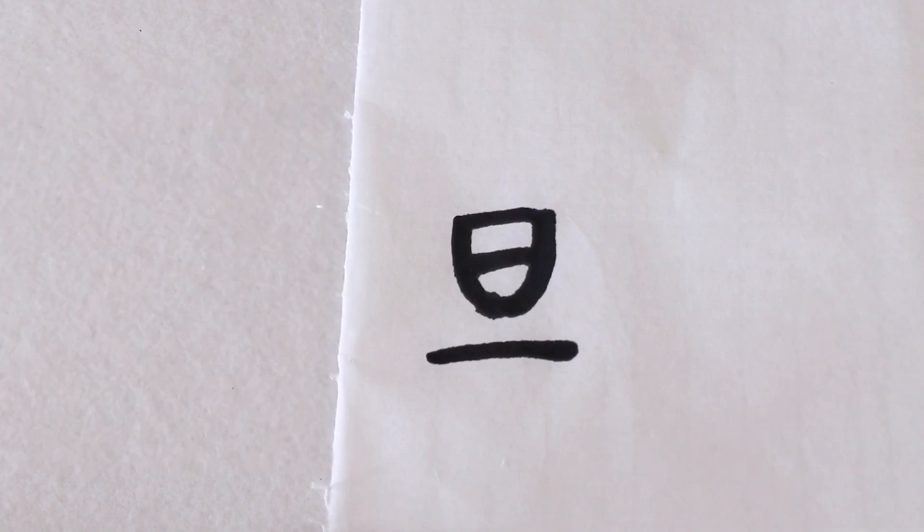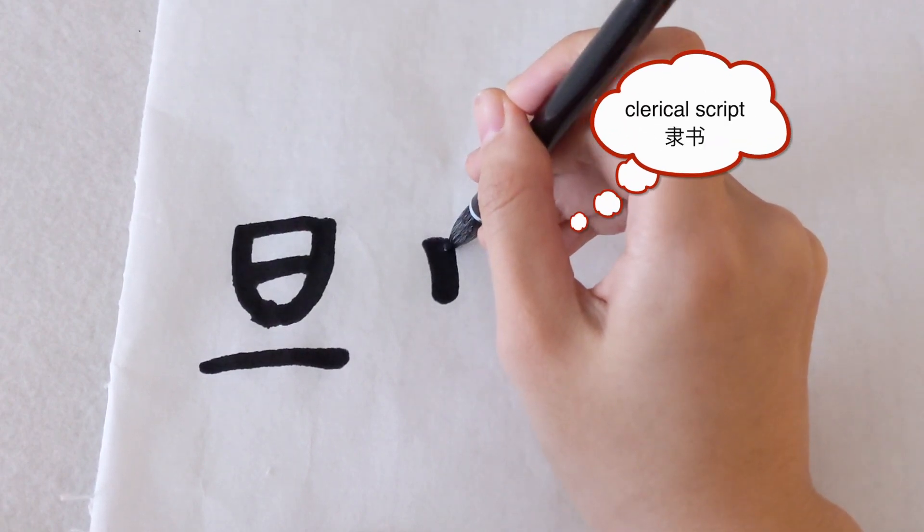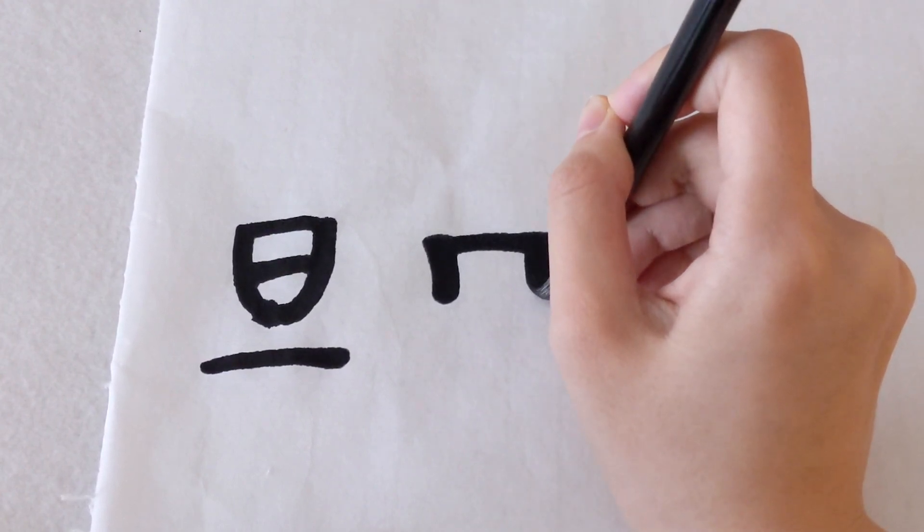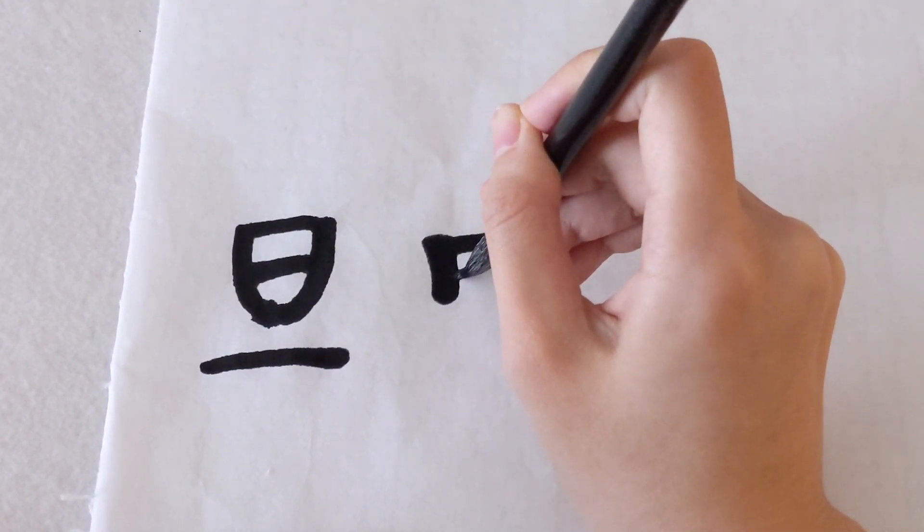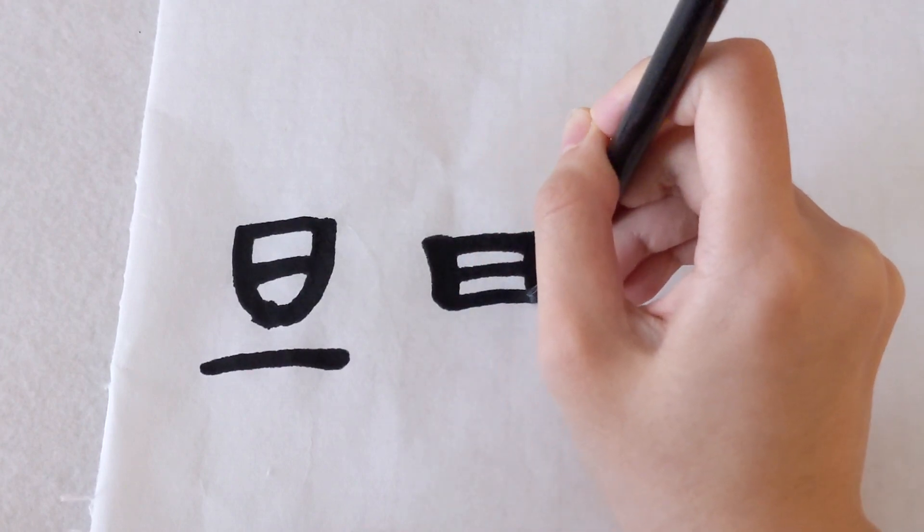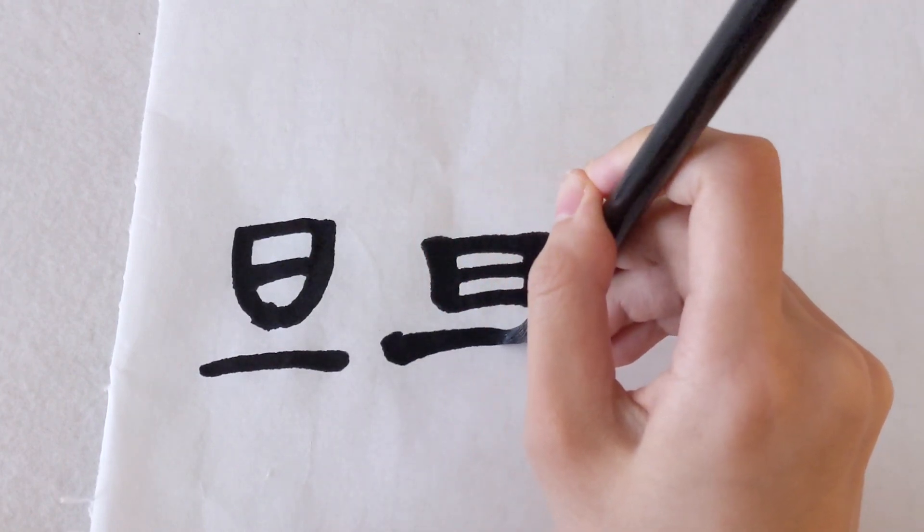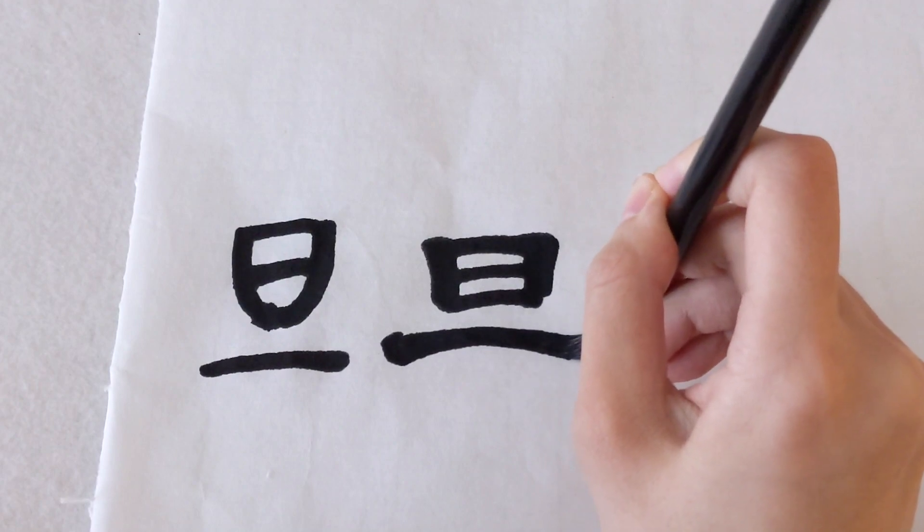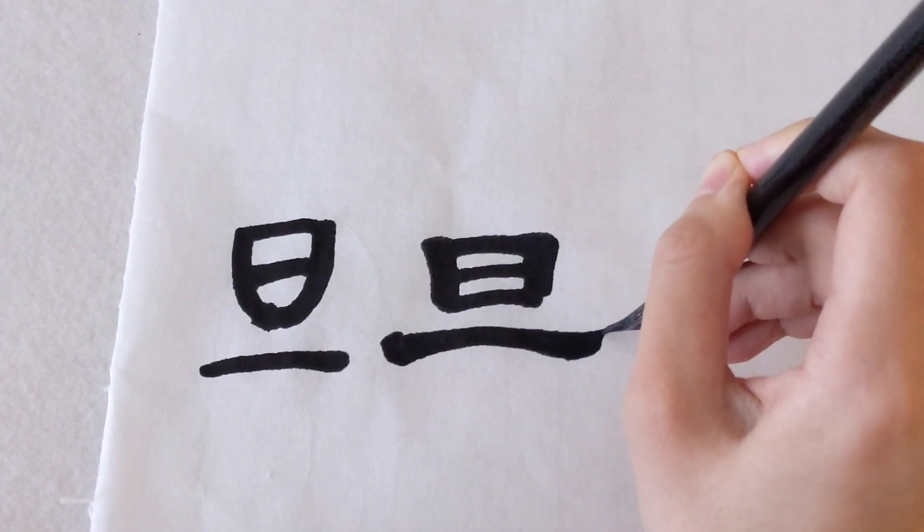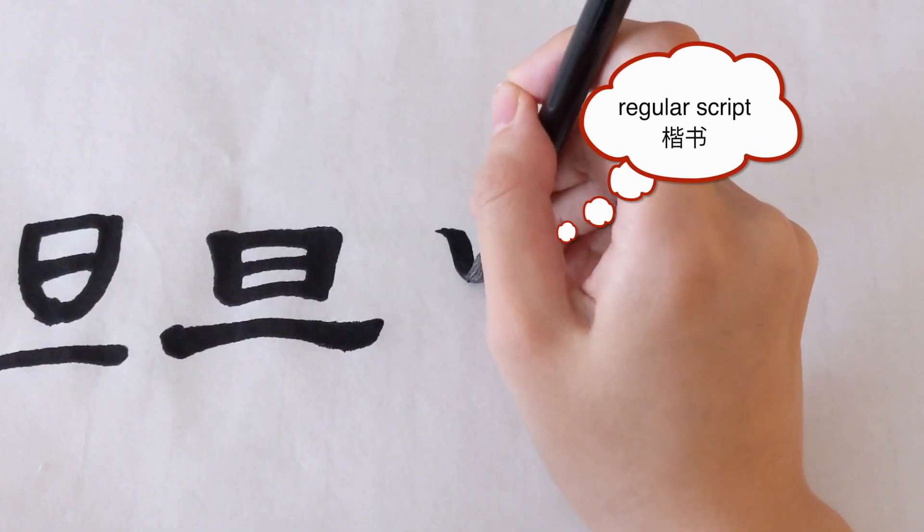The bottom horizontal stroke denotes the skyline, gradually evolves into the clerical script with the top part sun or 日 being more square-like and more variations are brought to the horizontal stroke. The whole character looks more flat, then for the regular script the character looks slimmer.